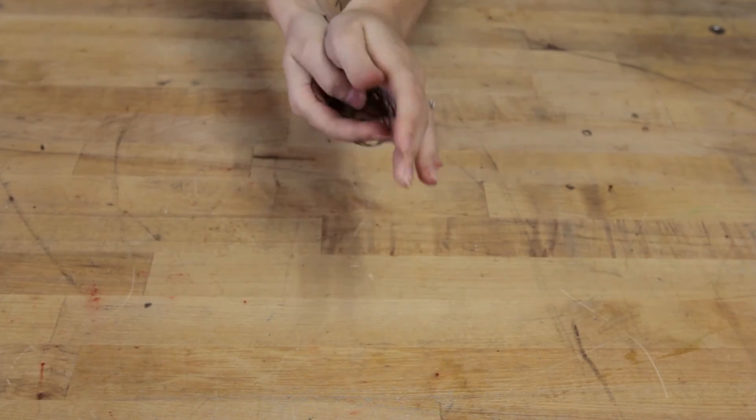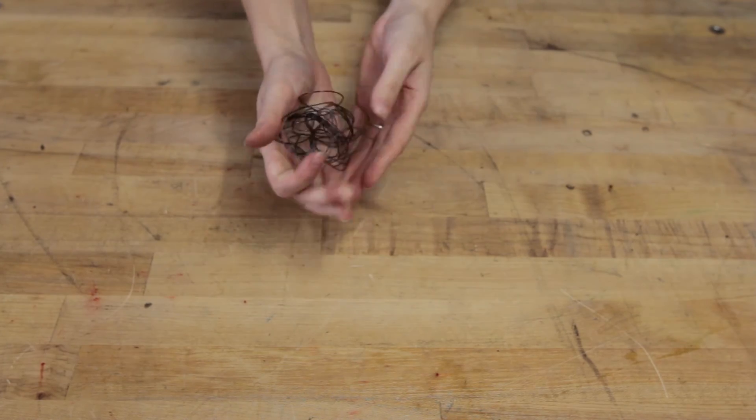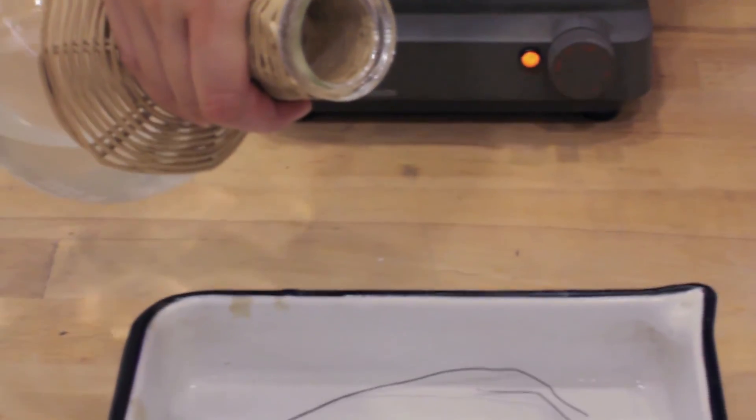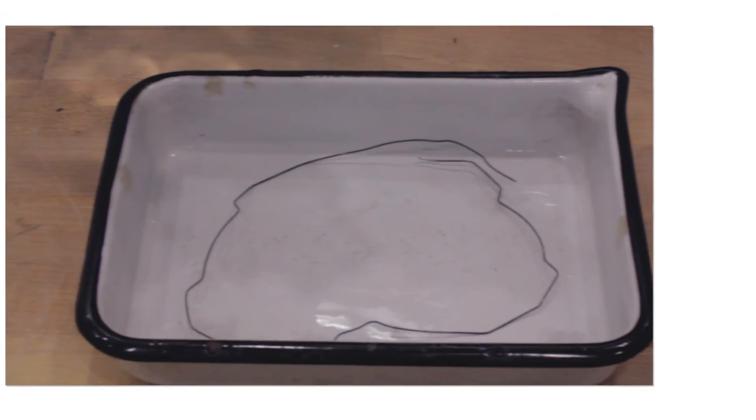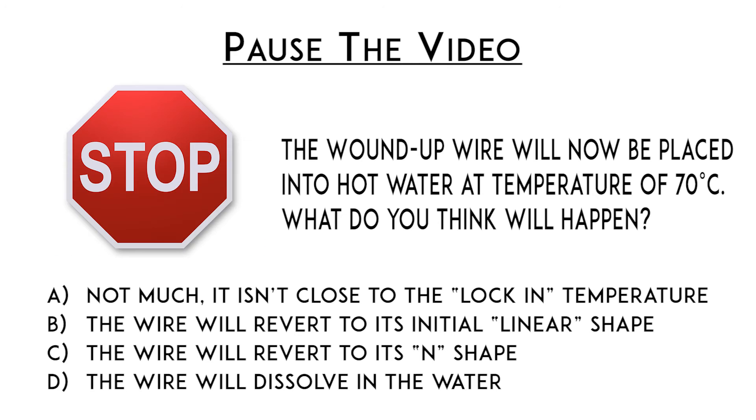The wound up wire will now be placed into hot water at a temperature of 70 degrees Celsius. What do you think will happen? Please record your vote on a piece of paper and explain your method of answer determination. You or your instructor will now stop the video.